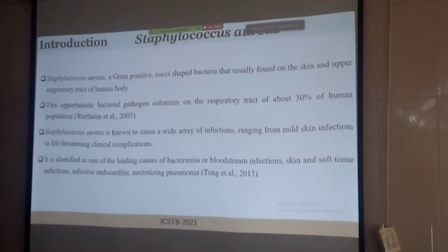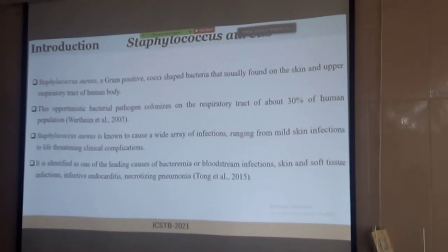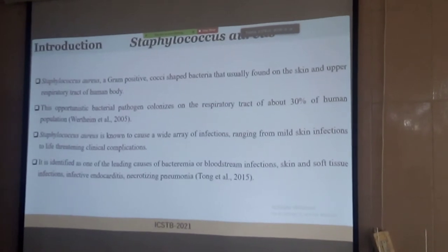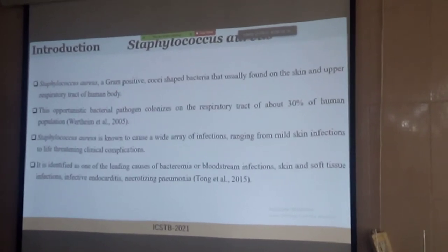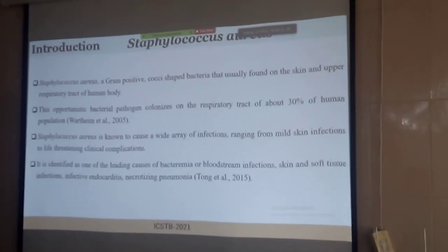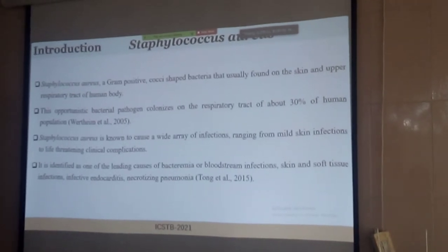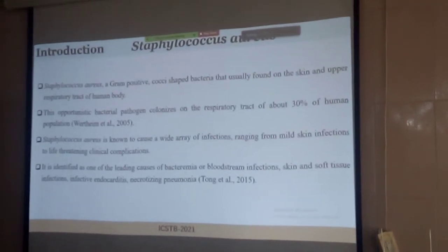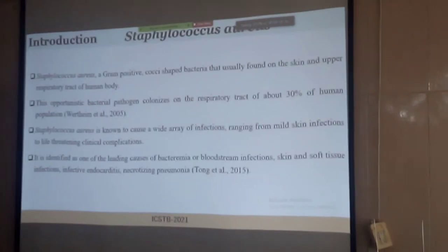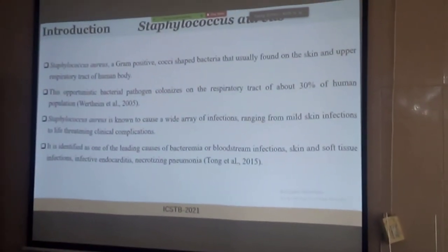When Staphylococcus aureus enters the circulatory system of its host, it can produce a lot of toxins such as exotoxin, hemolysin, and other toxins that cause bacteremia and life-threatening infections like infective endocarditis, necrotizing pneumonia, etc.